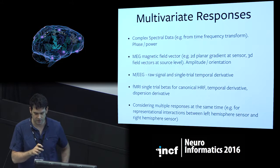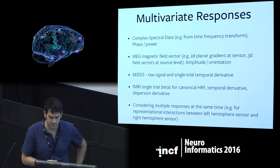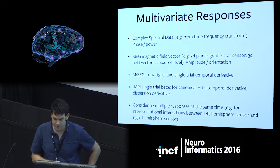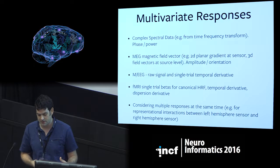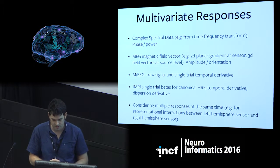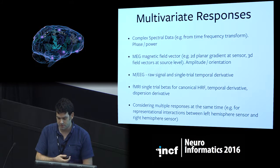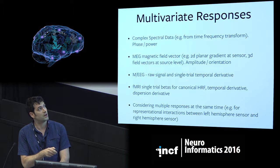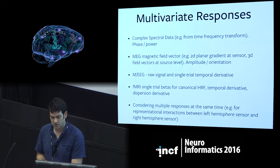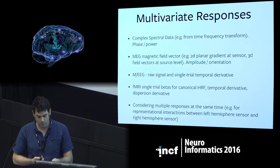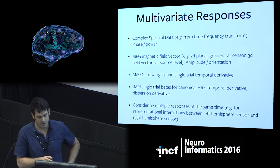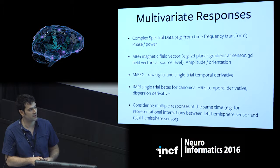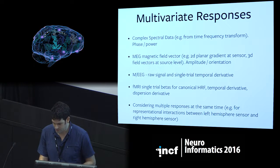Some examples of these sort of low-dimensional multivariate responses that I think are quite useful: complex spectral data is two-dimensional, and it's often interesting to split that into phase and power. In a multivariate setting, circular variables become less of a problem because we can just keep the 2D representation. We have MEG magnetic field vectors, which we might want to look at without reducing to a single maximum variance direction, and also look at their amplitude and orientation. I'm going to show today an example of adding in a single trial temporal derivative. With fMRI, we might want to have multiple measures of activation within a single voxel — for example, a beta corresponding to the HRF as well as its derivatives. And we might want to consider multiple responses at the same time to get representational interactions.